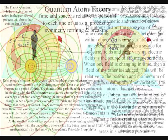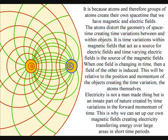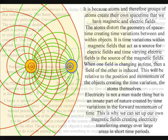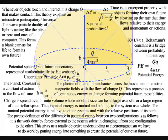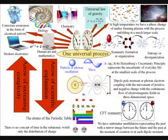It is time variations within magnetic fields that act as a source for electric fields, and time varying electric fields is the source of the magnetic fields. When one field is changing in time, then a field of the other is induced. This will be relative to the position and momentum of the objects creating the time variations, the atoms themselves.